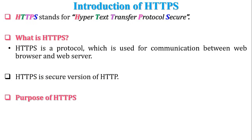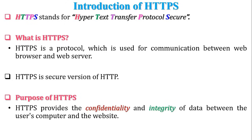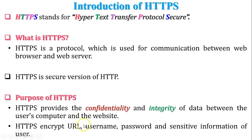The purpose of HTTPS is to provide data confidentiality and data integrity during communication. Data confidentiality means the message should be known only by the sender and receiver — essentially the privacy of the message. Data integrity means the data should not be altered during communication. HTTPS also encrypts the URL, username, password, and other sensitive information such as credit card details, debit card details, bank details, passport details, and bank card numbers.